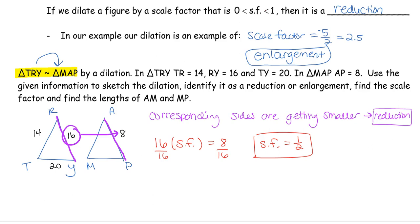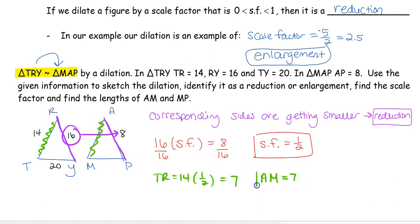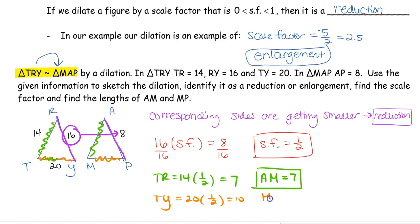The last part is to find the missing sides. TR is 14, so we take half of 14, which gives us 7 — the corresponding side AM has a length of 7. Likewise, TY is 20; we multiply by the scale factor of 1 half, giving us 10 — so MP is 10. And that's it for this video.